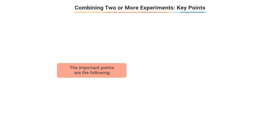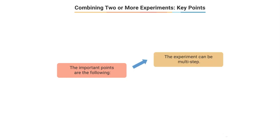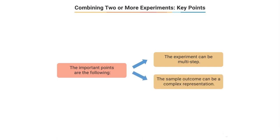Key points to note: experiments need not be only a single step — they can be multi-step. Consequently, the sample outcome can be a complex representation of the multi-step experiment and need not be just numbers.